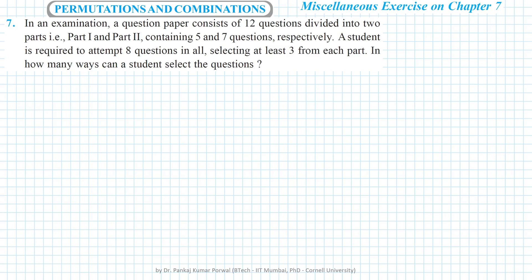In this question, in an examination there is a question paper that consists of 12 questions. These 12 questions are divided into two parts: Part 1 and Part 2. Part 1 contains 5 questions and Part 2 contains 7 questions. A student is required to attempt 8 questions in all and has to select at least 3 from each part.